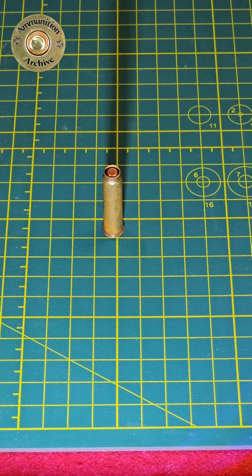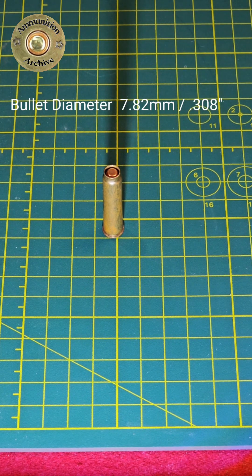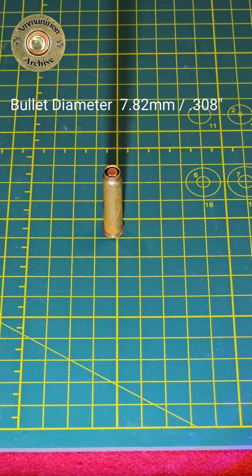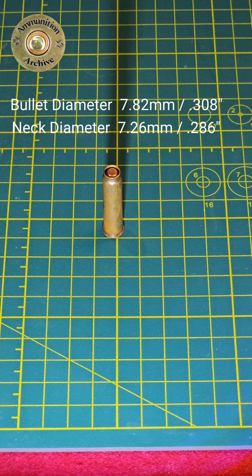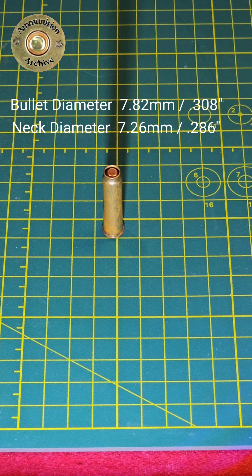Some specifications on this cartridge. It has a bullet diameter of 7.82mm or .308 inch. It has a neck diameter of 7.26mm or .286 of an inch.